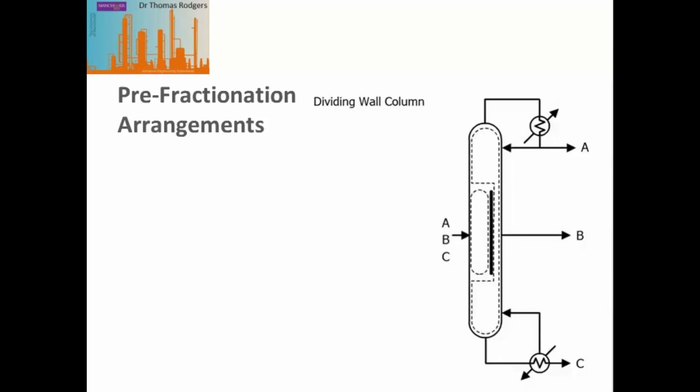We can then slide this first column across and integrate it into our second distillation column, with the separation divided by a dividing wall within the column.